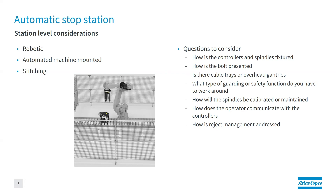If it's a robotic cell or automated machine, how is the cabling managed — is it going to some type of overhead gantry? If it's an existing station, we might have a solution that limits the amount of cabling needed by moving to a different system. Also, what type of guarding or safety function is in the station? With robotics there's generally a lot of guarding, but we also need to think about how operators safely work around cobots.